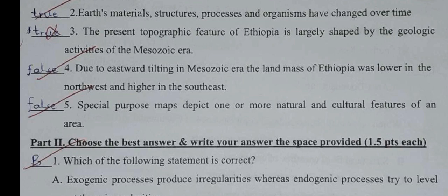Due to the stalwart tilting in the Mesozoic era, the land mass of Ethiopia was lower in the north-west and higher in the south-east.